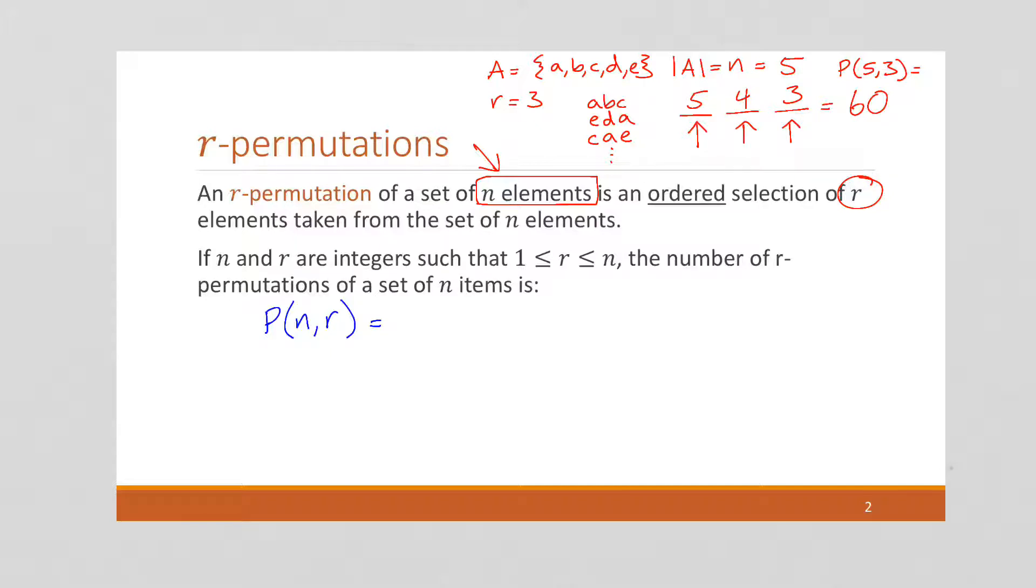So the way we're going to do it is we're going to have n ways of choosing the first element times n minus 1 ways of choosing the second element.